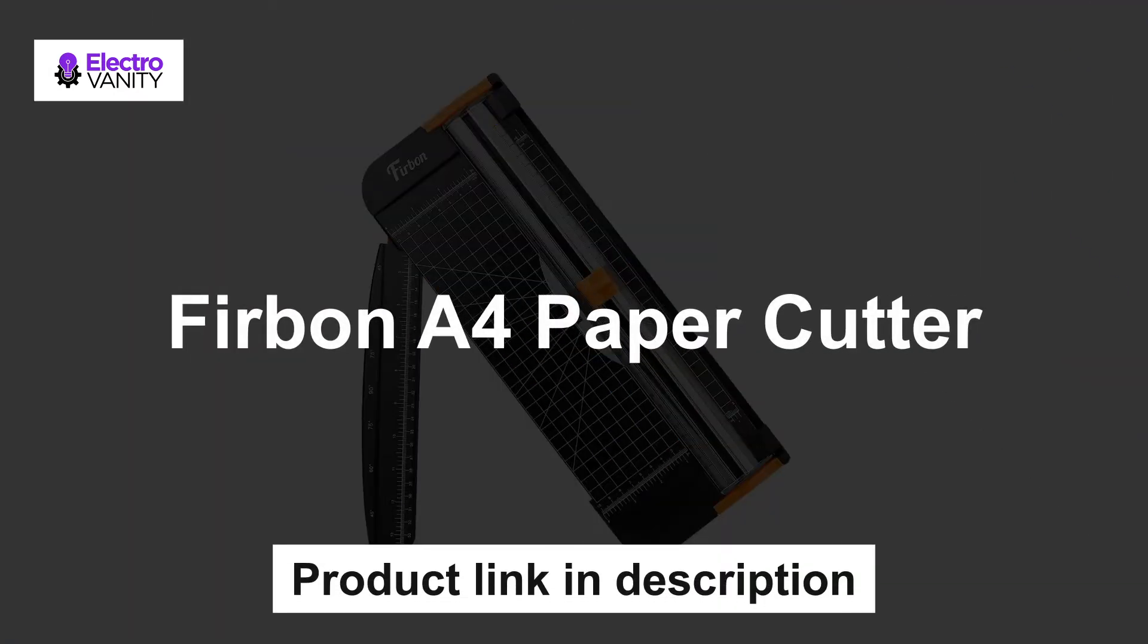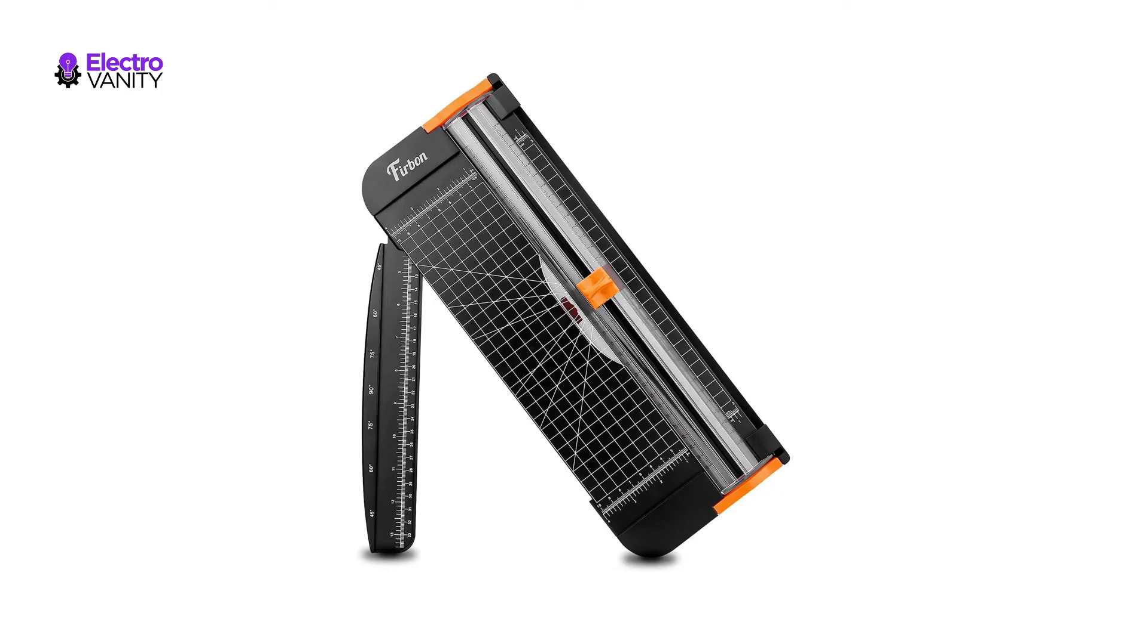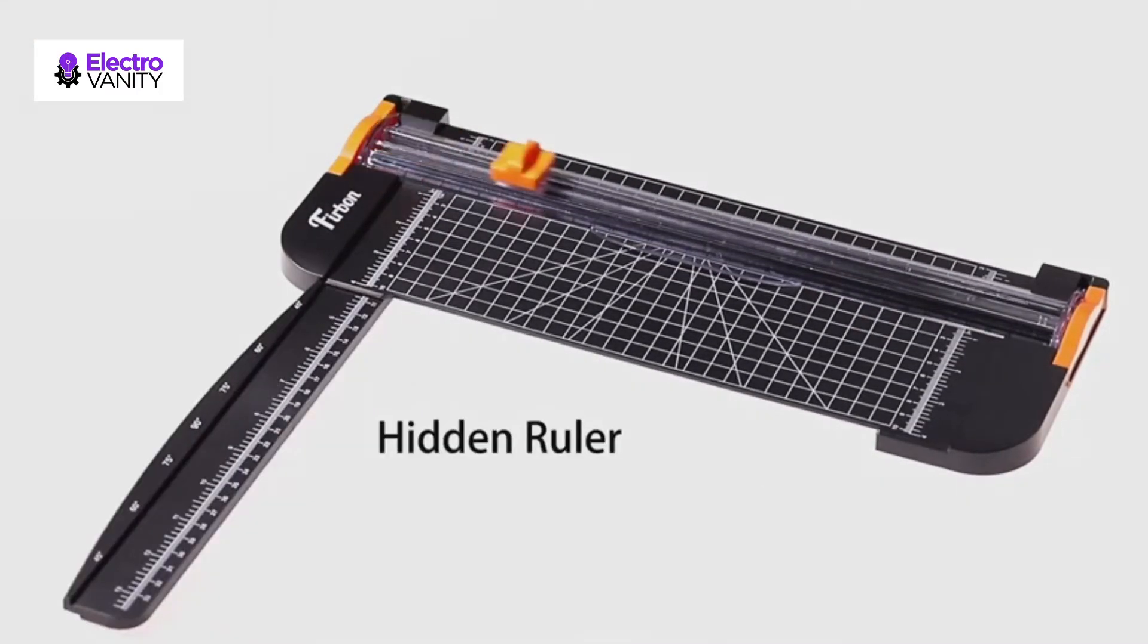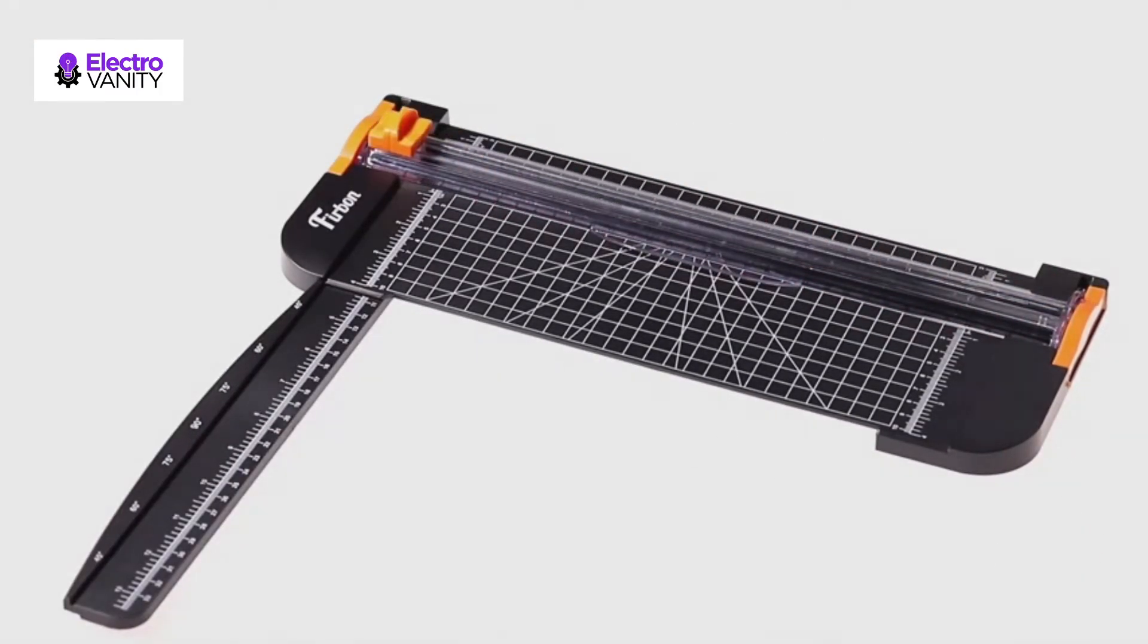The second one is Furbone A4 paper cutter. Presents clean, straight cutting along printed lines, no drag and easy to replace the blade when it becomes blunt. Designed to cut A3, A4, A5 paper, photos, cards, laminated stuff and more.